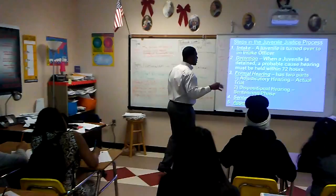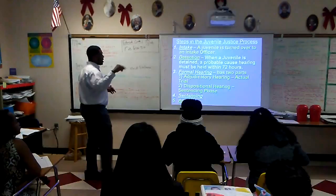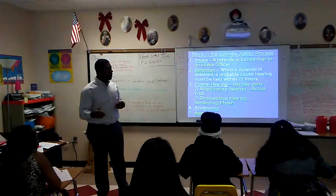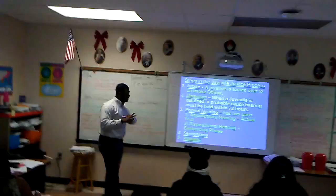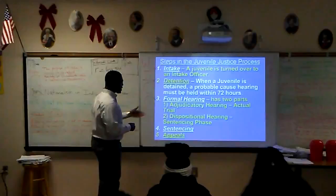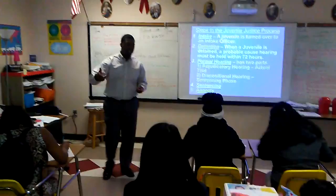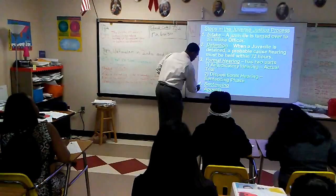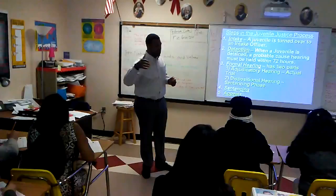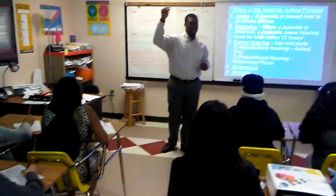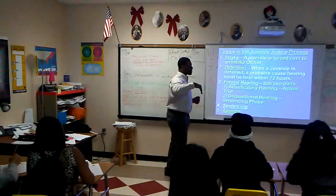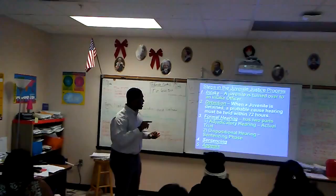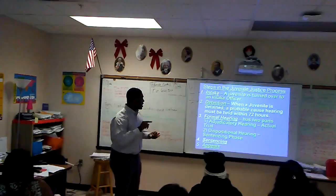Third is the formal hearing, which has two parts: the adjudicatory hearing, which is the actual trial where they tell you what your offense was; and the dispositional hearing, where they actually sentence you. Four is the sentencing — you'll find out what your sentence is, which could be probation or things of that nature. Five is appeals. You have to have your trial first before going to the appellate court. The highest court is the Supreme Court. You only go to the appellate court if you want to appeal your case for a different verdict.